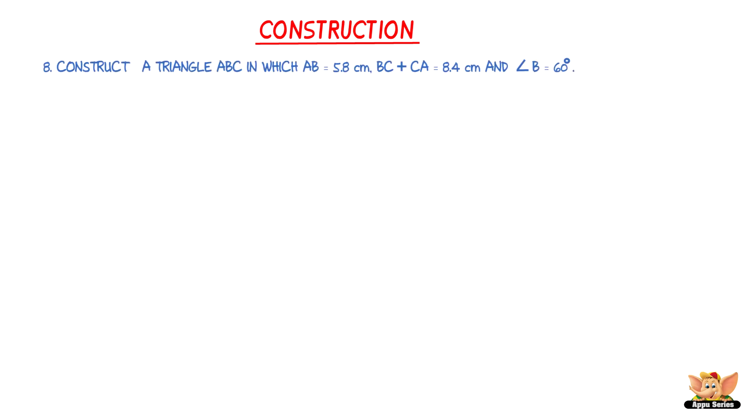Here is a question: Construct a triangle ABC in which AB equals 5.8 cm, BC plus CA equals 8.4 cm, and angle B equals 60 degrees.